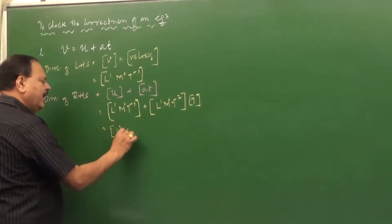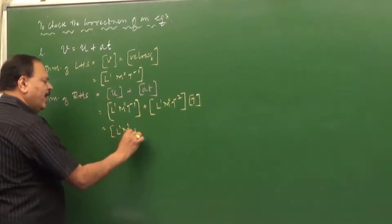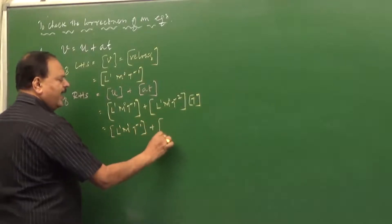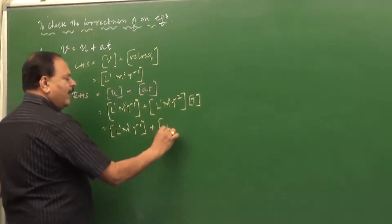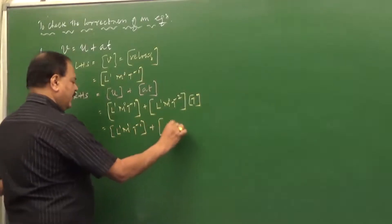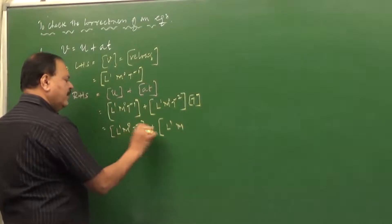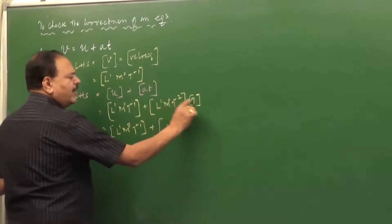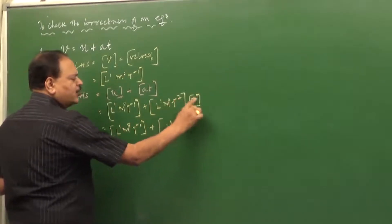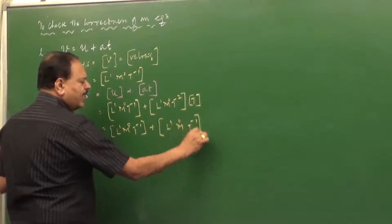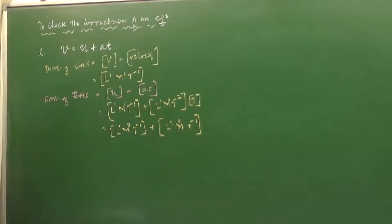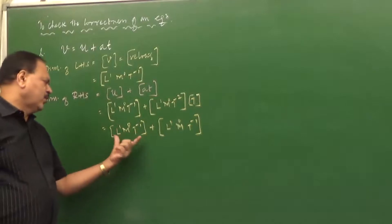Therefore, the dimension of A times T is L¹M⁰T⁻² × T¹, which gives L¹M⁰T⁻¹. So the dimension of the RHS is L¹M⁰T⁻¹.